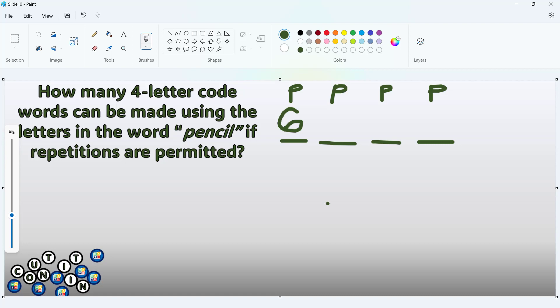For the second placement on our 4-letter code word, we can still use all 6 of them. Because even if we have used P on the first placement, we can still use P on the second because repetitions are allowed. The same goes with the third and fourth placements.